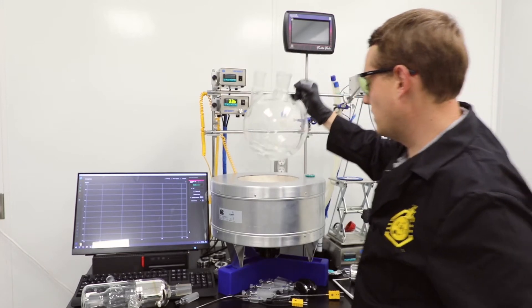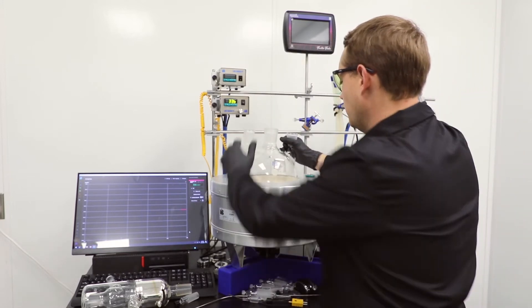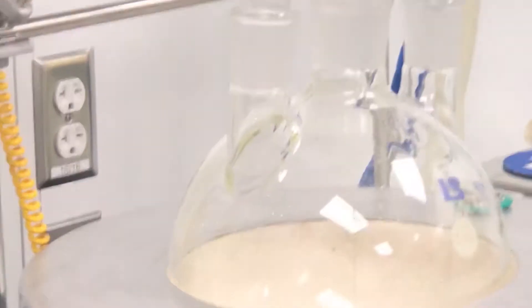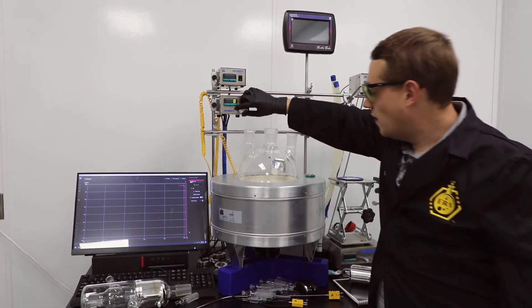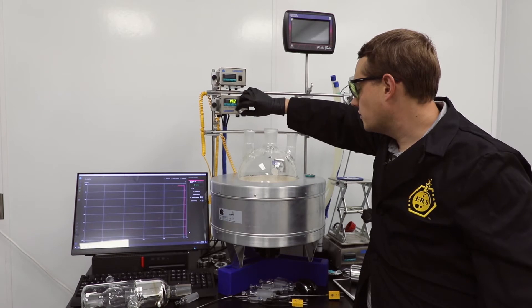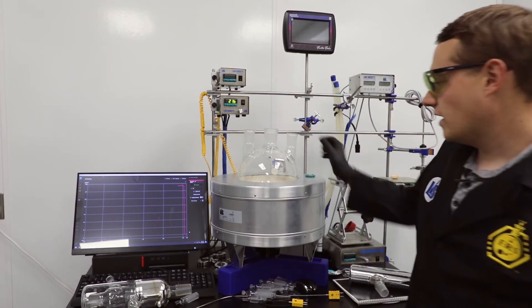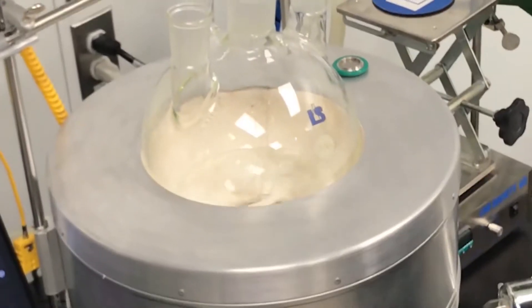Now that this is in here I'm going to put my flask into my mantle. I'm going to turn on my stir controller here which is already on, make sure it's at zero. Maybe turn on a slight stir just so I can have a visual of where I'm going to be in the flask.